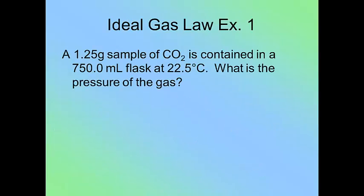Okay, so the best way to understand gas laws is to actually do them. So let's actually tackle all this stuff as we go. So it says a 1.25 gram sample of CO2 is contained in a 750 milliliter flask at 22.5 degrees Celsius.